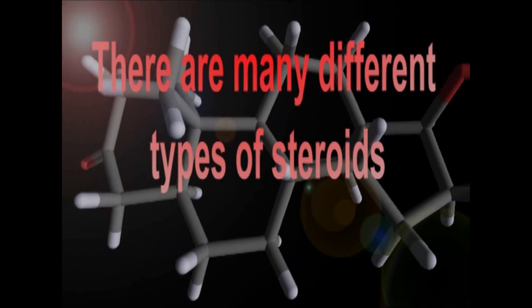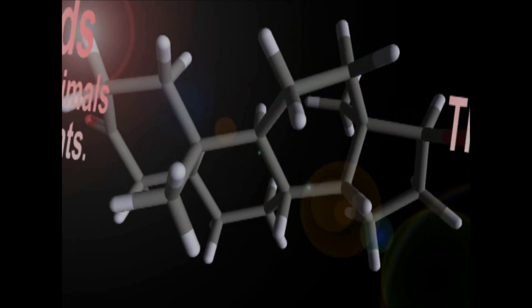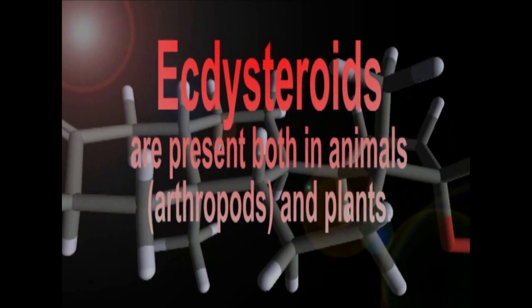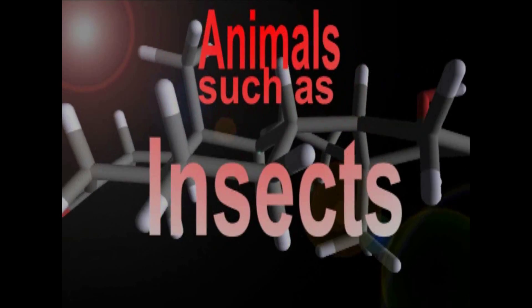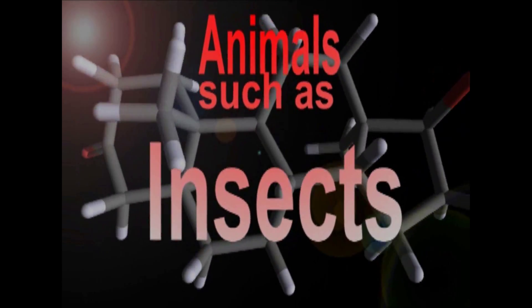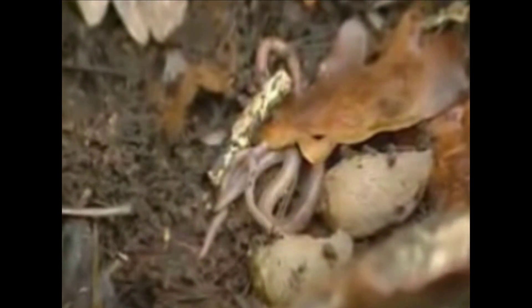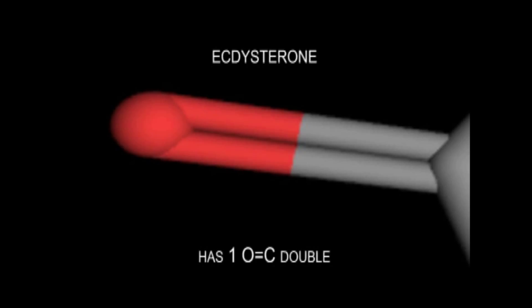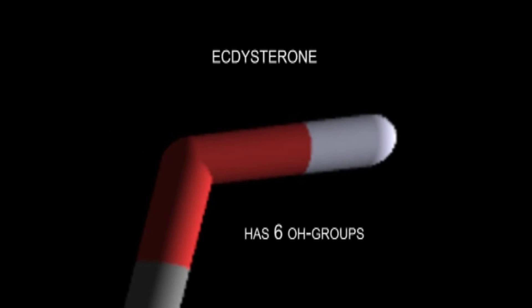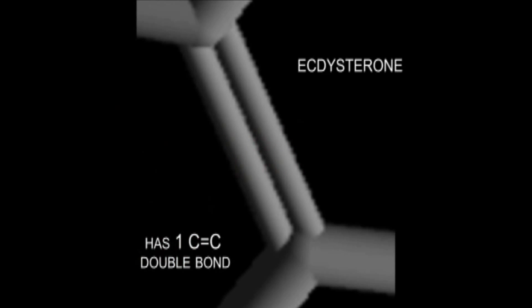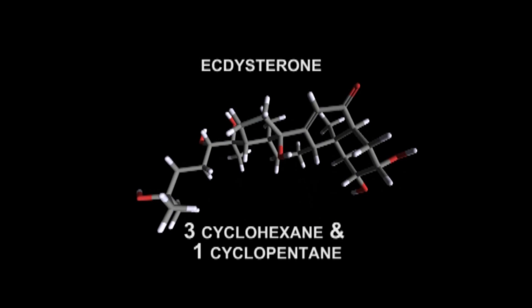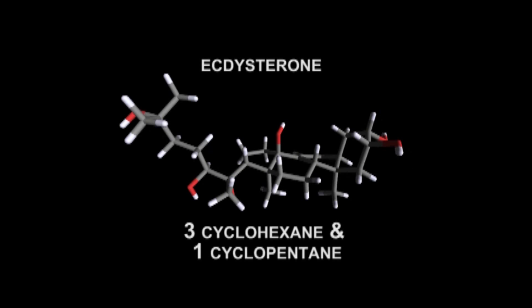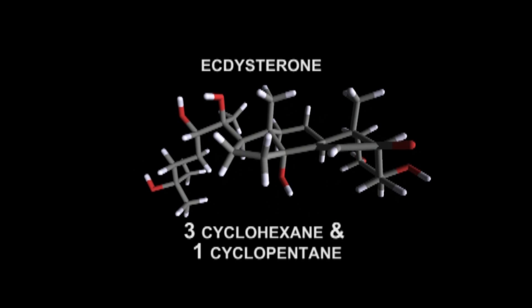There are many different types of steroids. Ecdysteroids are present in animals, arthropods, and plants — animals such as insects. Here we can see a large variety of different insects with ecdysteroids. Ecdysterone has one oxygen double bond, six alcohol groups, and one carbon double bond. It also contains three cyclohexane rings and one cyclopentane ring.